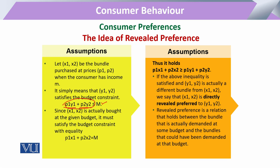Likewise, agar ek doosra combination hum le rahe hain X1 aur X2 ka bundle, to iska bhi total kharcha income ke barabar ya uss se zyada nahi hona chahiye. Ab yahan se agar hum dekhein to both bundles are in the income range of the consumer. Lekin agar wo is bundle ko purchase kar raha hai aur affordability mein hote hue Y wala bundle nahi khareeda, to hum kahenge that this bundle is directly revealed preferred than the other.